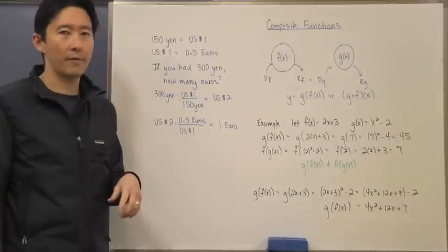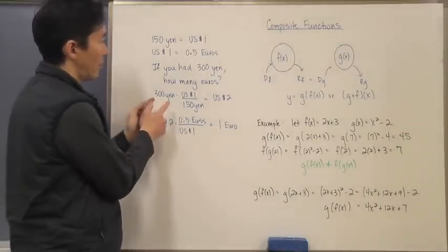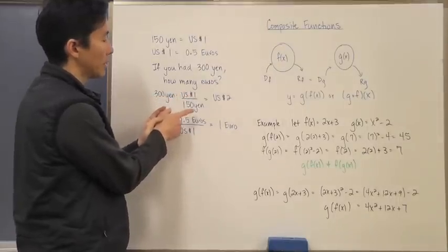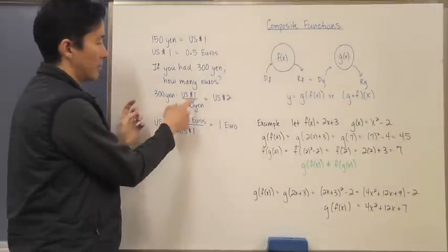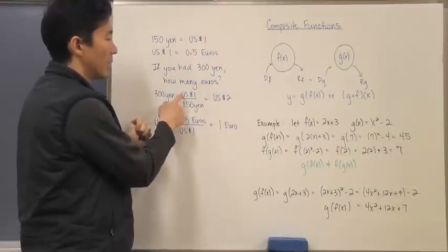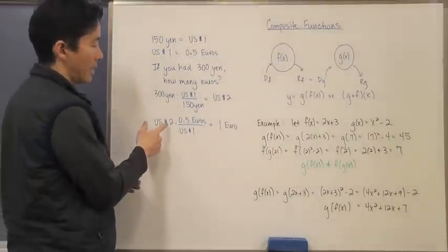If we went ahead and took this step by step, I would take 300 yen and multiply it by this conversion factor of one US dollar to 150 yen. The yens would cancel, 300 divided by 150 is 2, so there would be 2 US dollars.